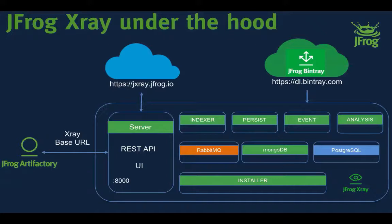X-Ray also talks to Bintray — for distribution of X-Ray itself, and for component information. jcenter, the largest Maven repository, is hosted on Bintray and has extensive component and licensing information for Maven-related artifacts. That licensing and component data is collected from Bintray so your local X-Ray instance has rich information for JARs, WARs, and Maven artifacts. The three external microservices include RabbitMQ for queue management, and PostgreSQL for storing component graphs. You can use X-Ray via its UI or through extensive REST API endpoints.